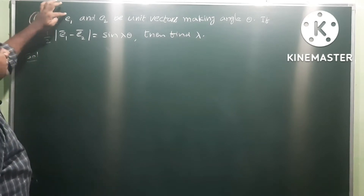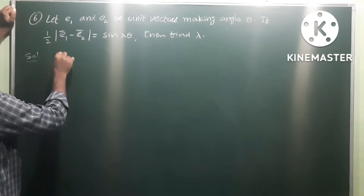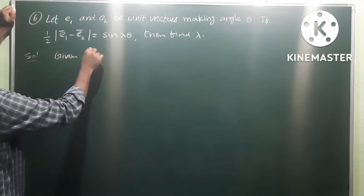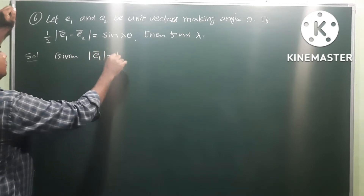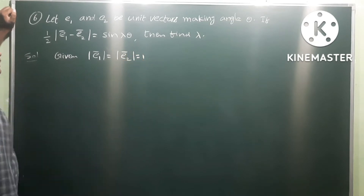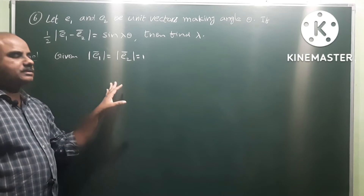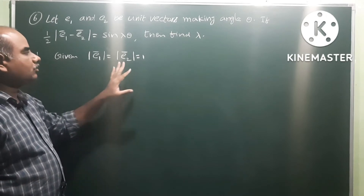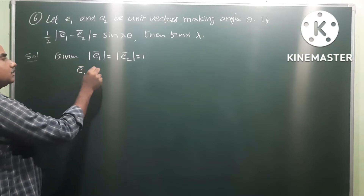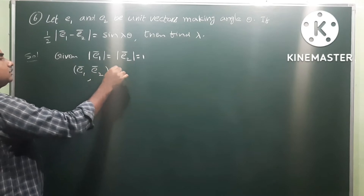Given: e1 and e2 are unit vectors, therefore modulus of e1 is equal to modulus of e2 is equal to 1. Both are given as unit vectors with modulus 1, and the angle between these vectors e1 and e2 is equal to theta.